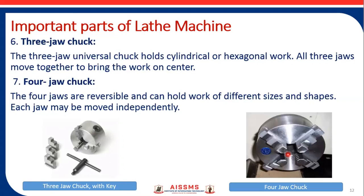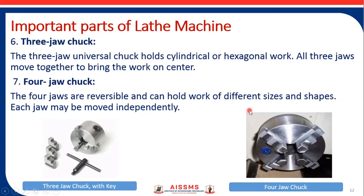The next important parts are the work-holding devices — chucks. These chucks are mounted on the spindle of the headstock. There are two kinds: three-jaw chucks and four-jaw chucks. A three-jaw chuck is a universal chuck generally used to hold cylindrical or hexagonal workpieces; all three jaws move together to bring the work on center. The four-jaw chuck is reversible and can hold different sizes and shapes of workpieces, with each jaw moving independently. This is the important difference between the three-jaw and four-jaw chucks.